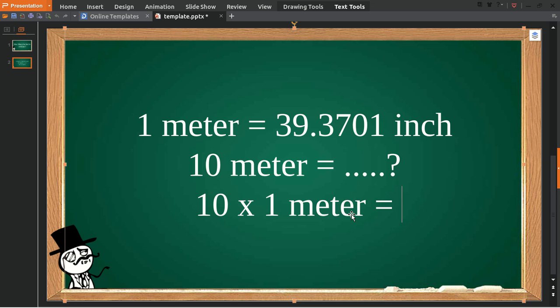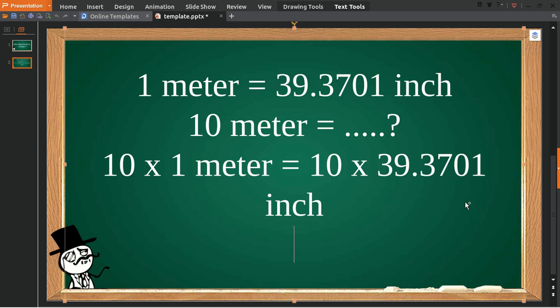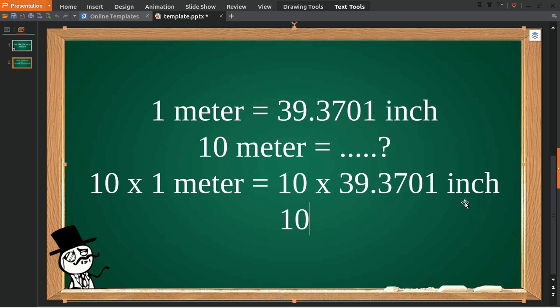Put it here, give it an equal sign, and put 10 on the right side. Then you multiply 10 by 39.3701, which equals 393.701. That's the answer.